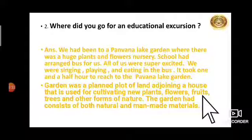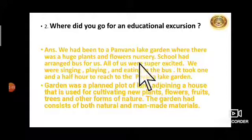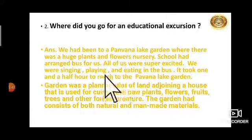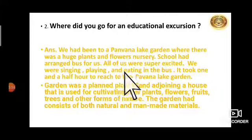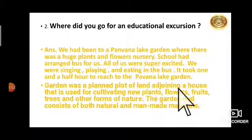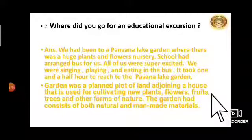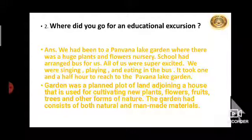The garden consisted of both natural and man-made material. Here, students, the question is where did you go for an educational excursion? In the essay we have written Paona Lake Garden, but you can write any other place and whatever your experience was. Here I have written about a plant and flowers nursery, where you went by bus — it took one and a half hours. You had a lot of fun playing, eating, and singing. Man-made material means there were slides and swings to enjoy, and natural means there were many new plants and fruits to observe.